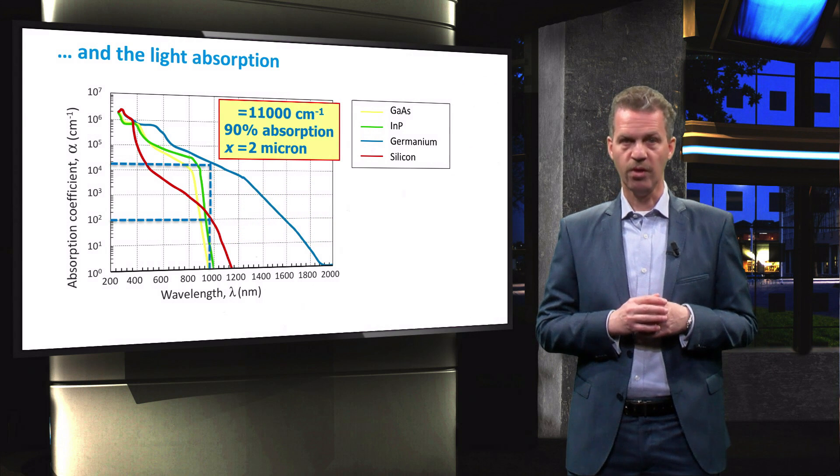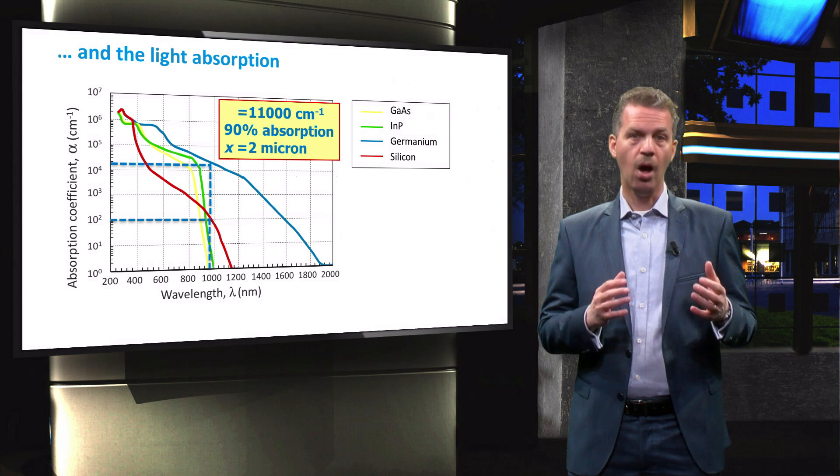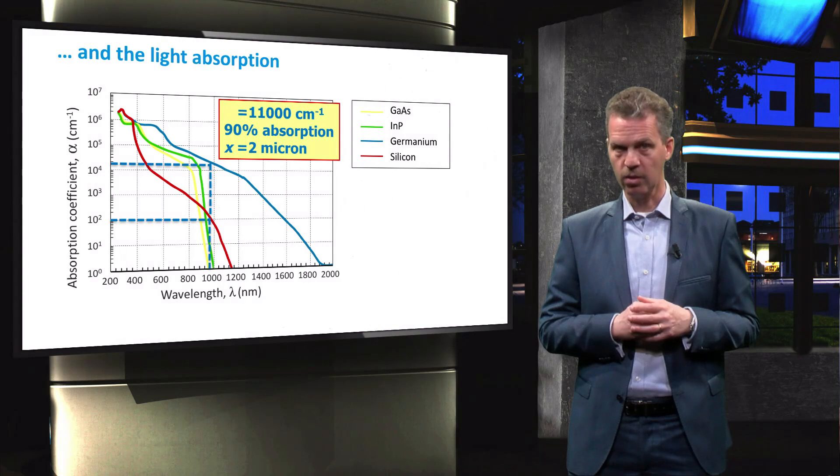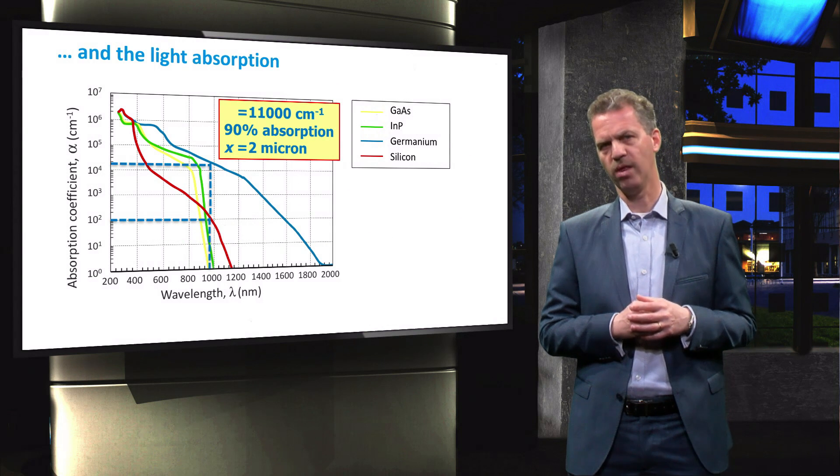As an example, the thickness of germanium, which is a direct band gap material, only needs to be about 2 micrometers thick to absorb 90% of the incident photons at a wavelength of 1000 nm.